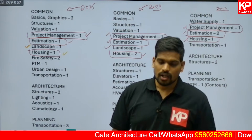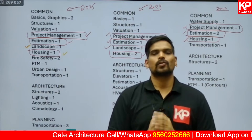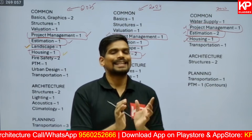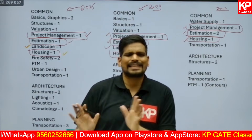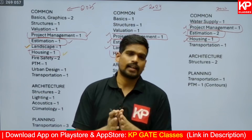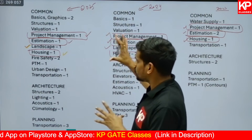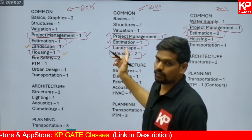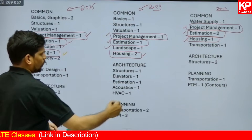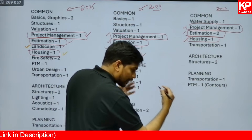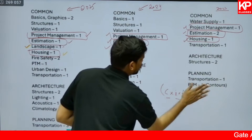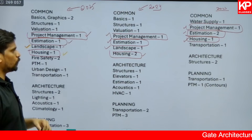Estimation is one of the easiest subjects to score in, for both architecture and planning students. If you know basic geometry related to 3D forms, the centerline method, the long wall–short wall method, and how to calculate volumetric or area-based estimates, you can easily score two to four marks. For Landscape, the key numerical is runoff calculation: Runoff = Runoff Coefficient × Rainfall Intensity × Area. This appeared in both the 2024 and 2025 papers.